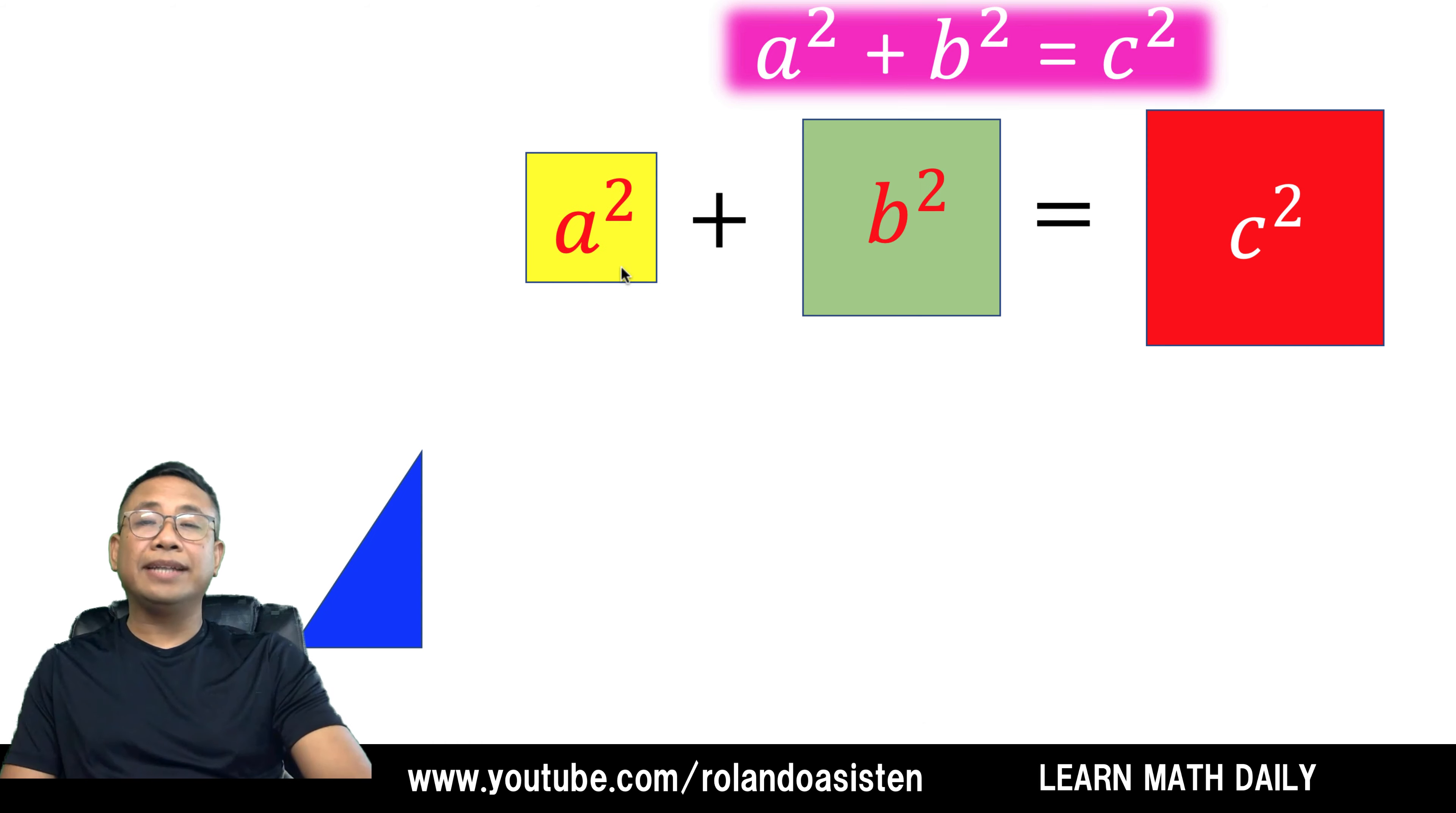Our goal is to show that the combined areas at the left, that is A squared plus B squared, is equal to the area at the right side. And here's the trick.